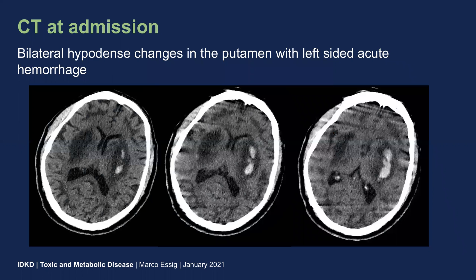Things changed since he was admitted. There is now a bilateral hypodense change in the putamen with an acute left-sided hemorrhage. As you can see here, both basal ganglia — putamen predominantly — are affected, and there are areas of acute hemorrhage.